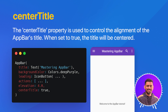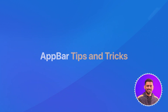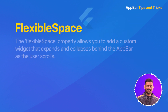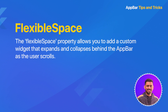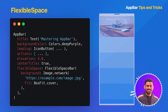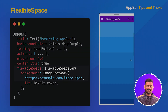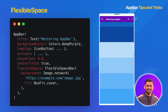Now that we have covered the essential properties of AppBar, let's explore some tips and tricks to help you get the most out of it. FlexibleSpace: the FlexibleSpace property allows you to add a custom widget that expands and collapses behind the AppBar as the user scrolls. In this example, we have added a FlexibleSpaceBar with an image that will expand and collapse behind the AppBar.